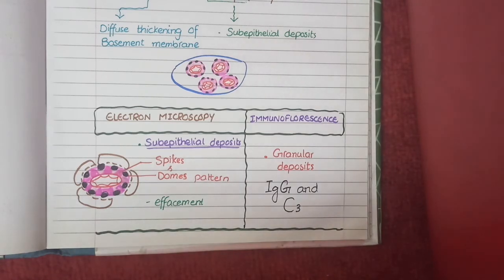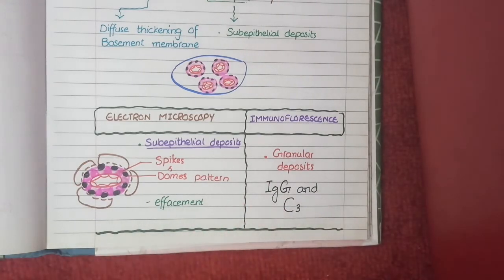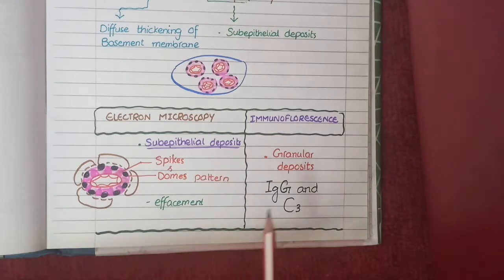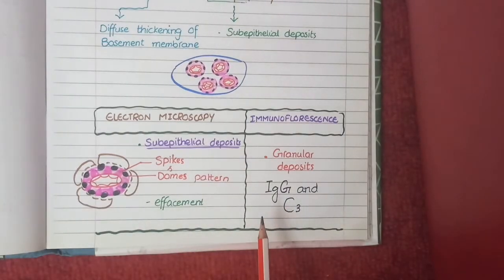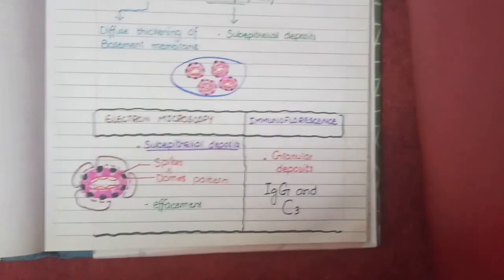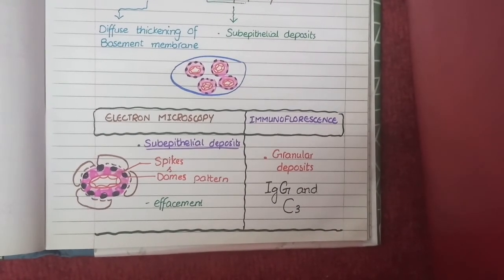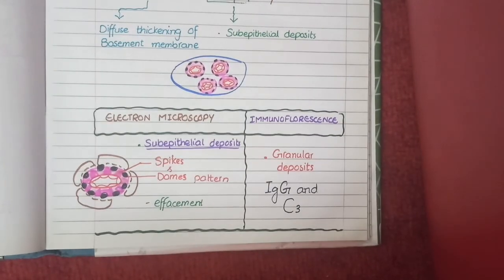On immunofluorescence, you will see granular deposits of IgG and C3. This is because the disease is mediated by IgG-containing immune complexes that activate the complement system pathway, producing C3. This concludes the discussion on the pathology of membranous nephropathy.